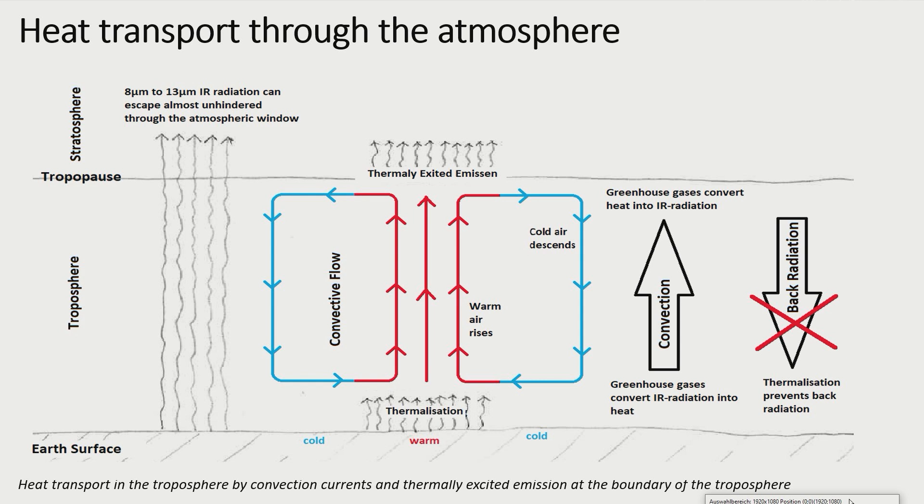As discussed before a back radiation from the upper atmosphere down to the Earth's surface is not possible, since thermalization in the dense lower atmosphere acts as a kind of check valve. Or in short,